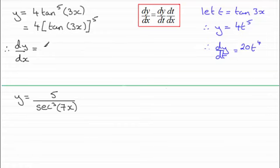So I nominated t to be tan 3x so I've got y equals 4t to the power 5 and so therefore dy by dt would be 20t to the power 4, t being the tan 3x. So just put that in brackets there. And that's raised all to the power 4.